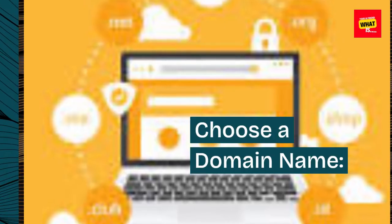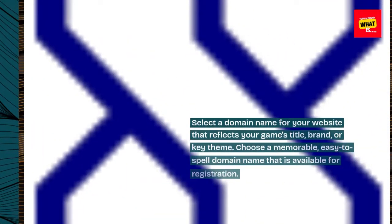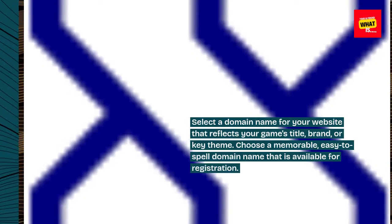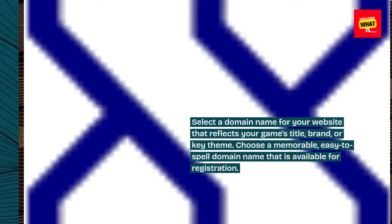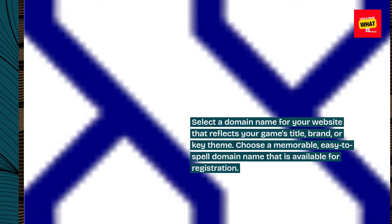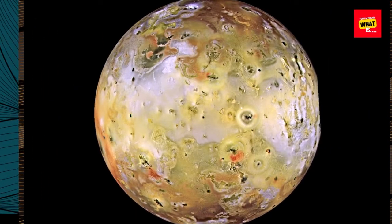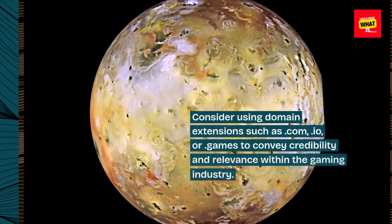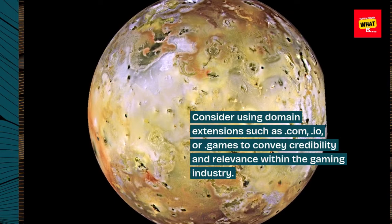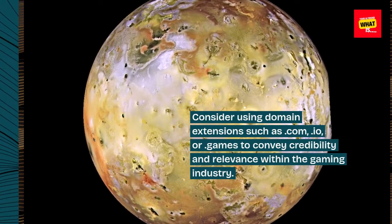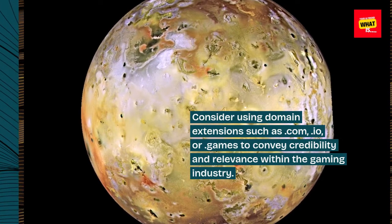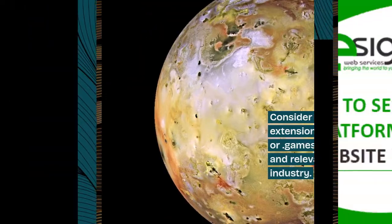Choose a Domain Name. Select a domain name for your website that reflects your game's title, brand, or key theme. Choose a memorable, easy-to-spell domain name that is available for registration. Consider using domain extensions such as .com, .io, or .games to convey credibility and relevance within the gaming industry.